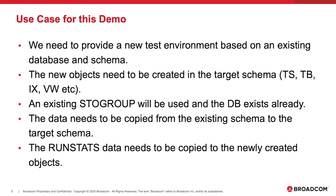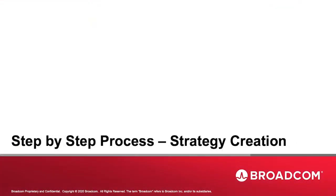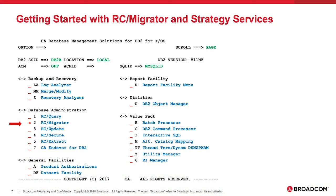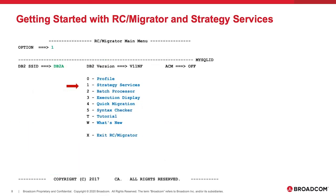The first part of the process within the tool is the strategy creation. We enter into RCMigrator from the main CA database management solutions for DB2 menu, and that's because RCMerger is a subcomponent of RCMigrator. Then we enter Strategy Services, option 1. Strategy Services is a control centre for RCMigrator, and we use it to create and maintain migration, alteration and compare strategies.